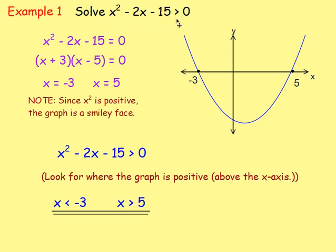Start by setting it equal to zero, factorising and solving for x to get the two roots — in this case -3 and 5. Then think: it's bigger than zero above the x-axis. Be careful whether it says strictly greater than or greater than or equal to. In this case it's bigger than zero, so x is less than -3 or x is greater than 5. You end up with two separate answer regions.